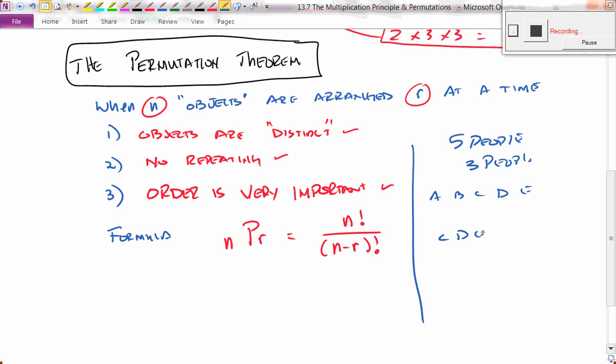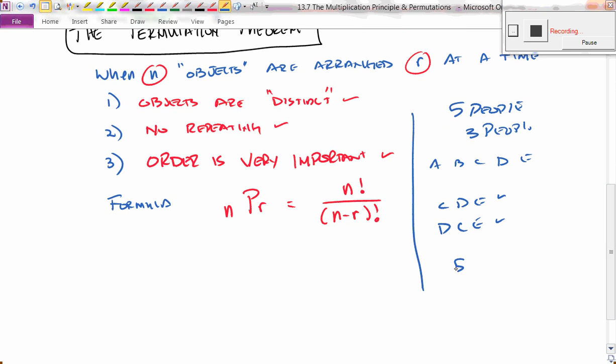Well, you could have C, D, E, or you could have D, C, E. Those are different, right? Even though they're the same people, the order is important.